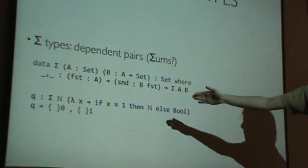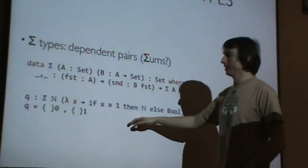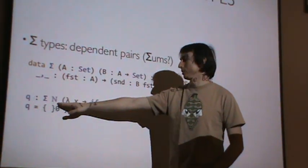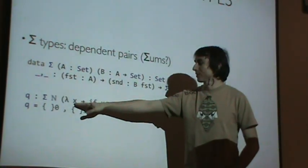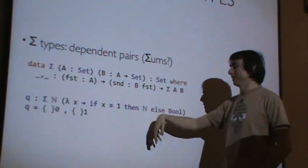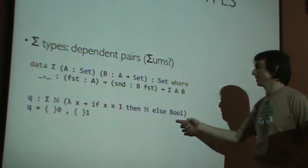And so I can write some ridiculous type like this Q here. And this Q has a type of, the first argument is going to be a natural, and the second argument is going to be determined by whether the first argument is 1 or not. If the first argument is 1, then it's going to be a natural 2, otherwise it's going to be Boolean.